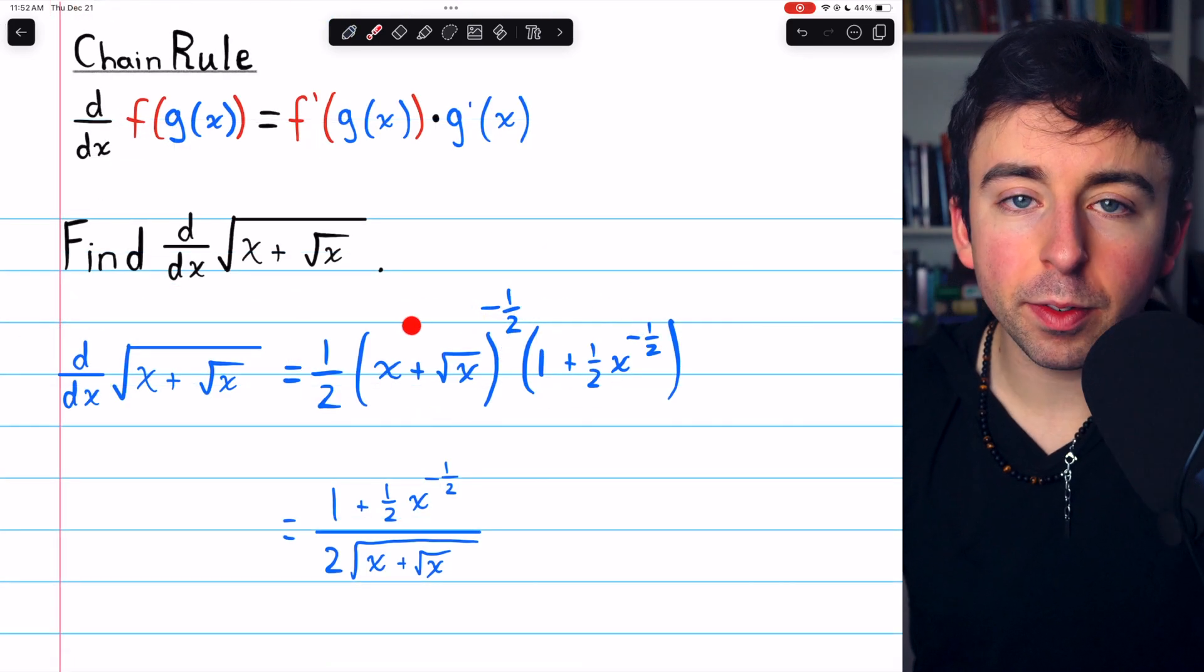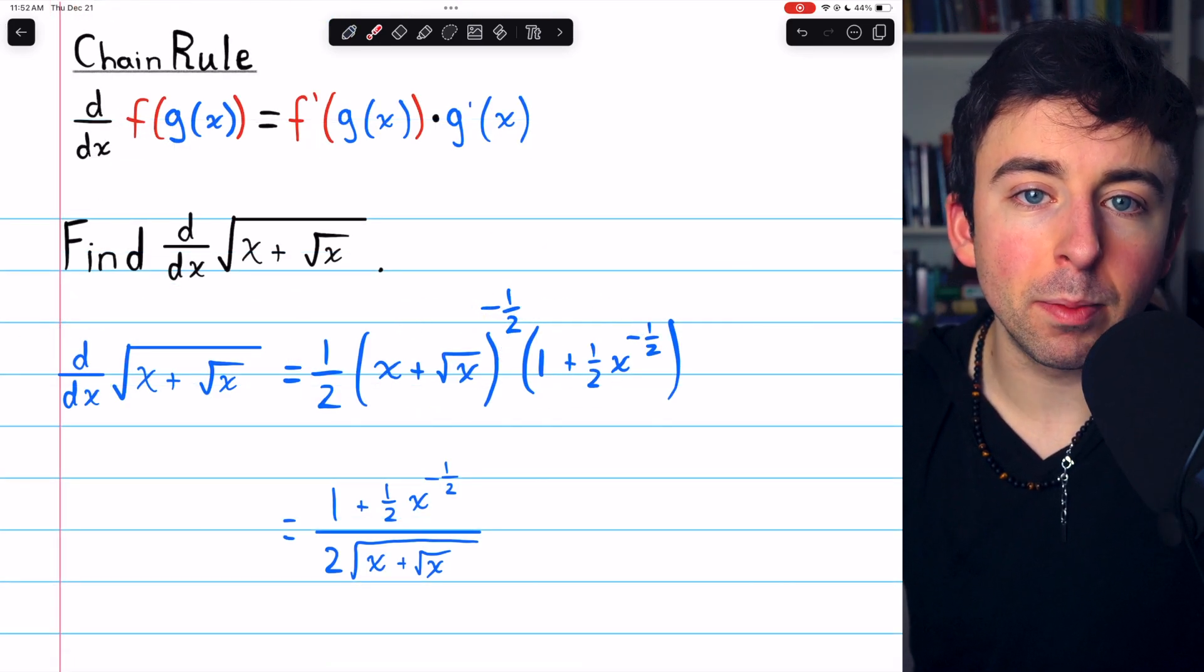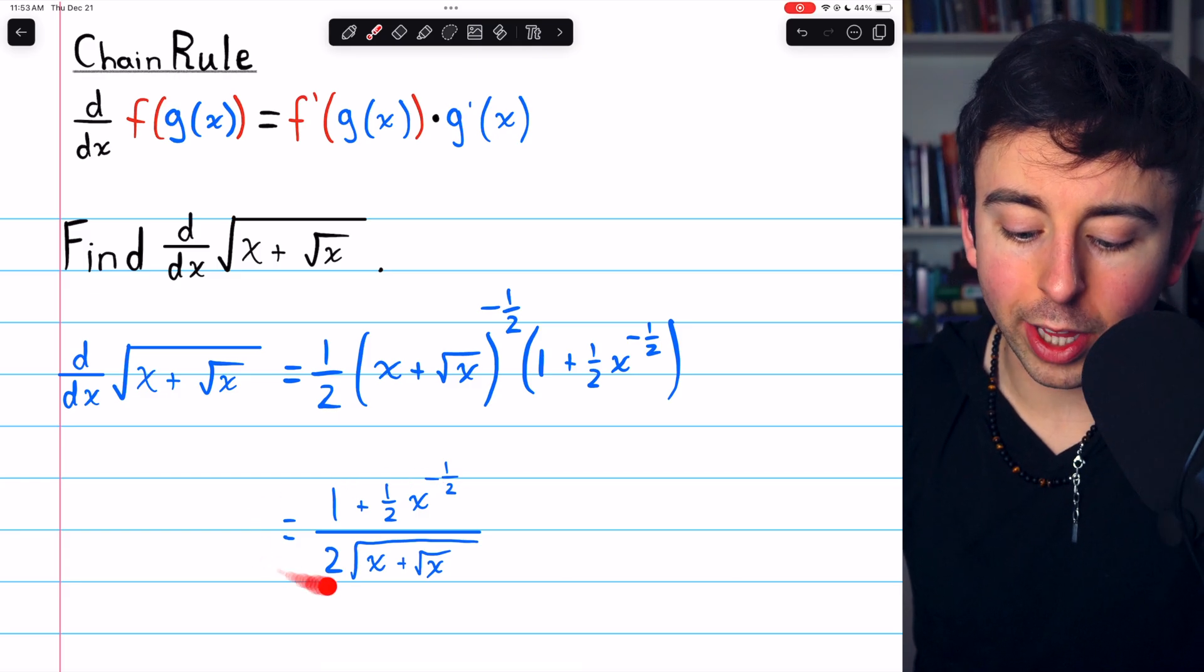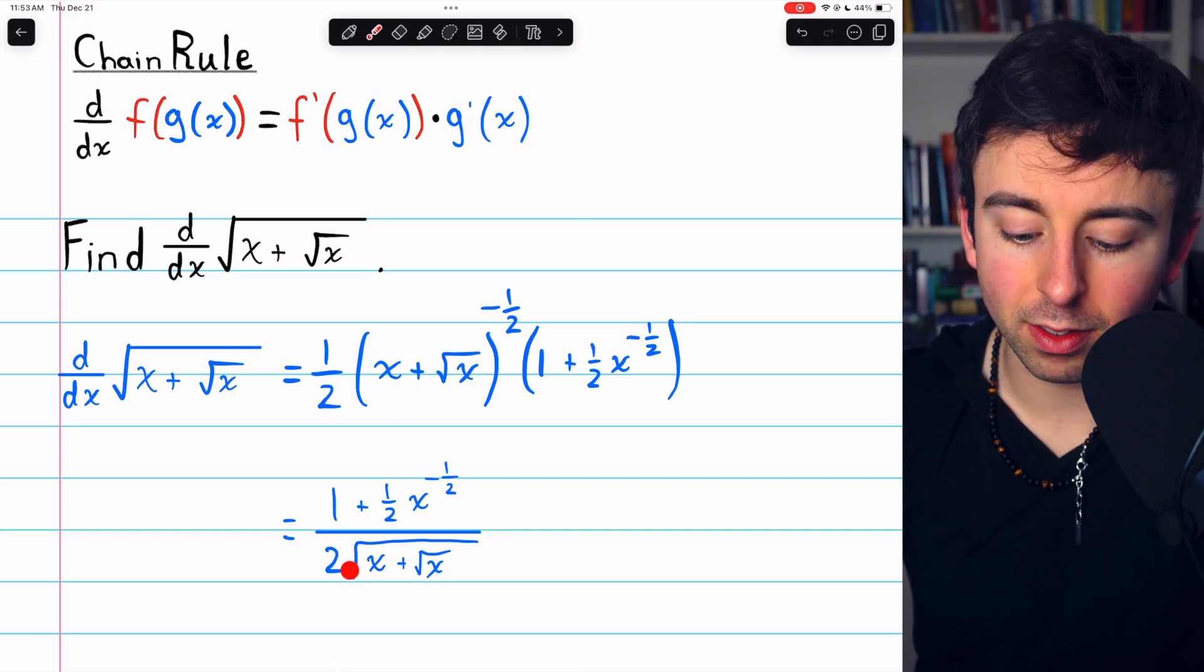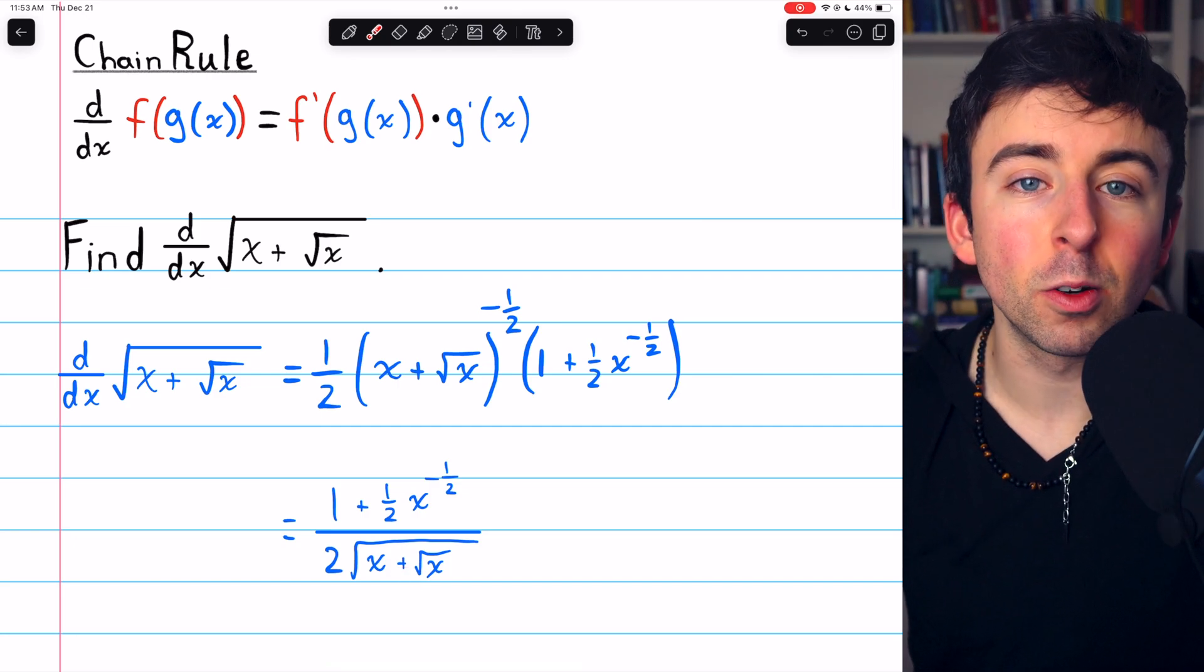And that is our derivative. There's a lot of different ways we could write it by moving the powers around and whatnot. Here's one way you might simplify it: one plus a half x to the negative half, and then divided by two times this guy, which in the denominator is just the square root of x plus root x.